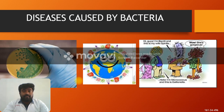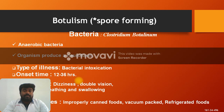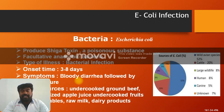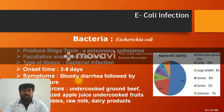Botulism is caused by a spore-forming organism, Clostridium botulinum, which is the causative agent. E. coli infection: E. coli produces a Shiga toxin. The organism Escherichia coli is the causative agent, with an incubation time of three to eight days. Symptoms caused by this organism include bloody diarrhea.